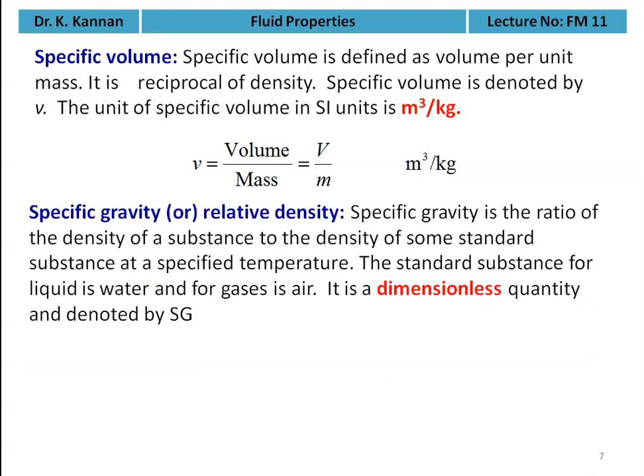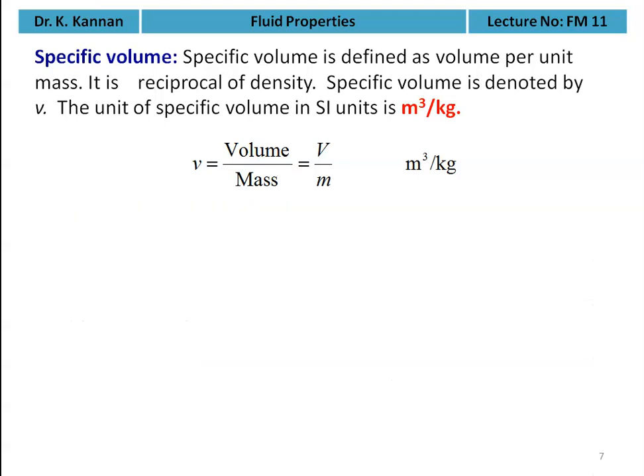Specific volume is defined as the volume per unit mass — it is the reciprocal of density, denoted by small v. The unit for specific volume in SI is meter cube per kilogram. So specific volume v = V / m, the unit is m³/kg.